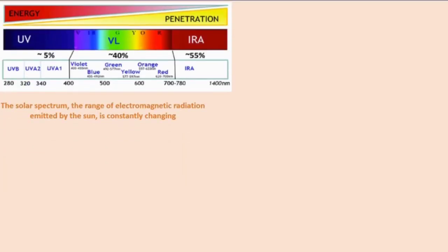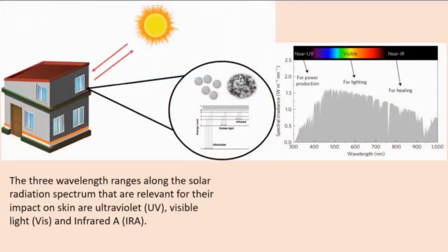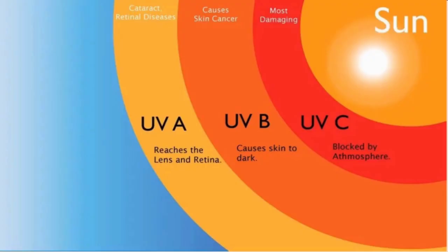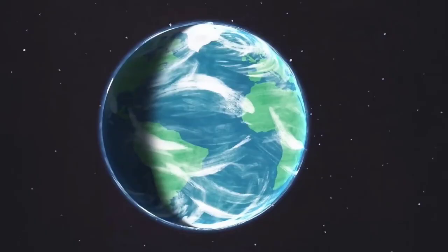Here are the ranges of electromagnetic radiation emitted by the sun. The three wavelength ranges along the solar radiation spectrum are relevant for their impact on skin, and that impact goes beyond sunburn.